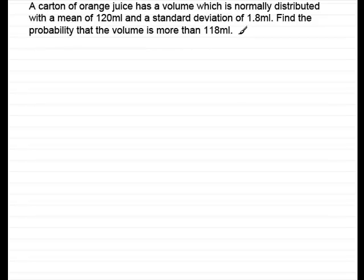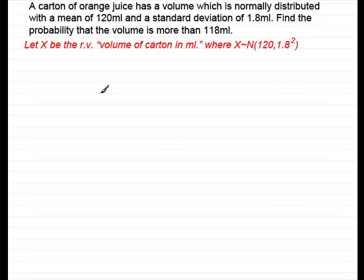The first thing I want to do is to define a random variable x and that random variable will be let x be the random variable volume of the carton in milliliters. Where x is normally distributed, remember we have two parameters, the mean mu and the variance sigma squared.